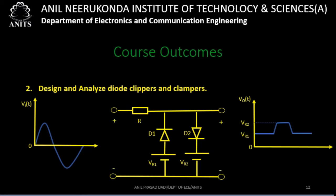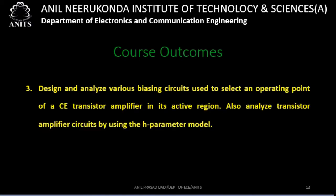Course outcome 2 focuses on whether we are able to design and analyze two important types of circuits: diode clippers and clamping circuits. The third course outcome is design and analyze various biasing circuits. The concept of design and analyze appears in almost all course outcomes, so having understood these terms, it is easy to understand any of the course outcomes.